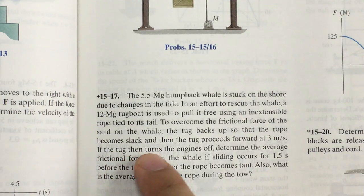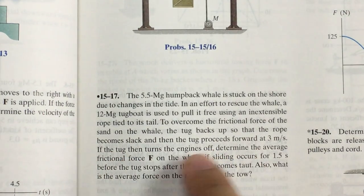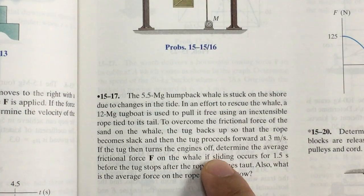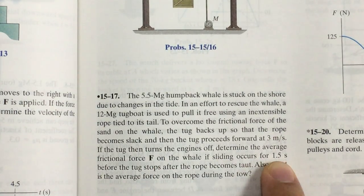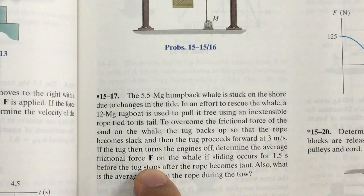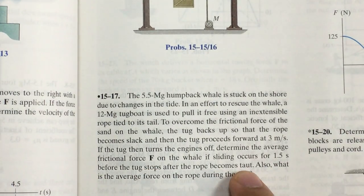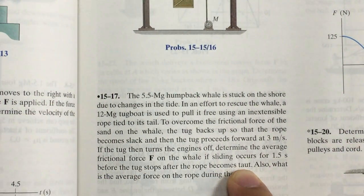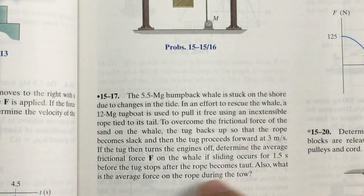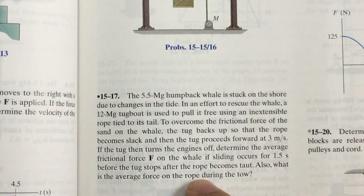If the tug then turns the engine off, determine the average frictional force F on the whale if sliding occurs for 1.5 seconds before the tug stops after the rope becomes taut. What is the average force on the rope during the tow?